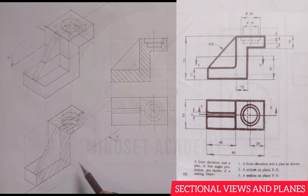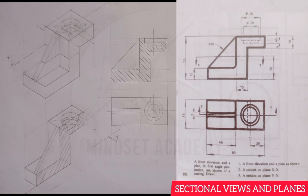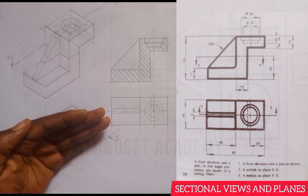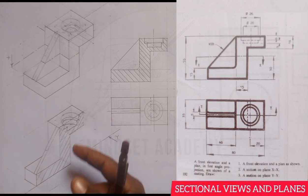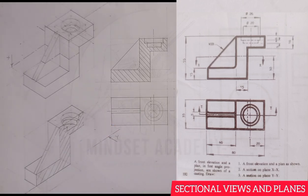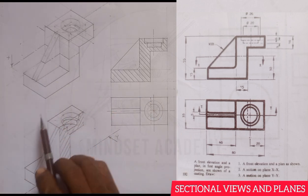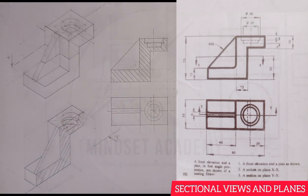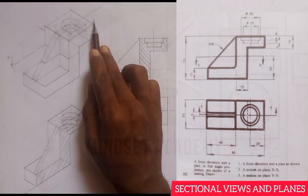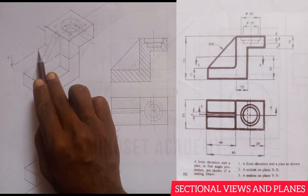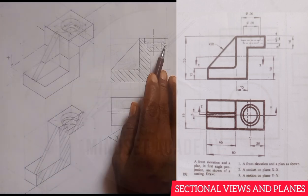This is what section XX means — this is just to help your understanding of what the cutting plane is doing. You cut it from the plan and look in the direction shown. The next cut is section YY — cutting the elevation from the top, which means removing the top portion of the body.